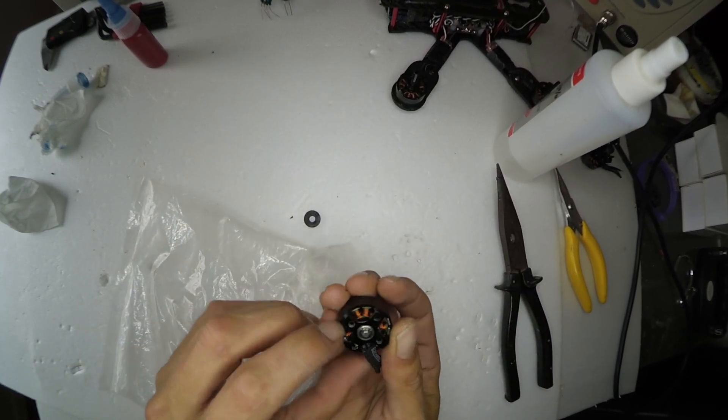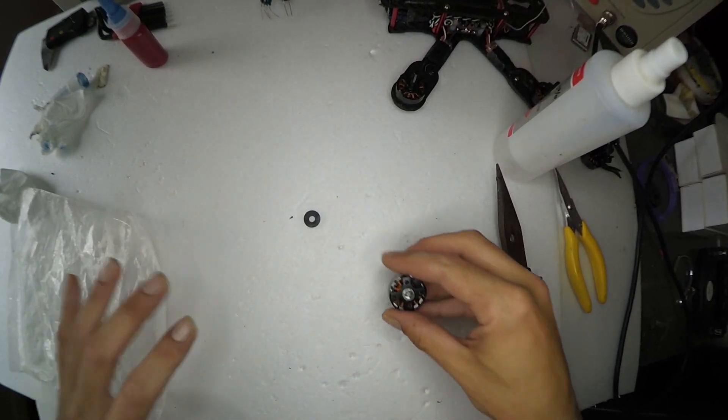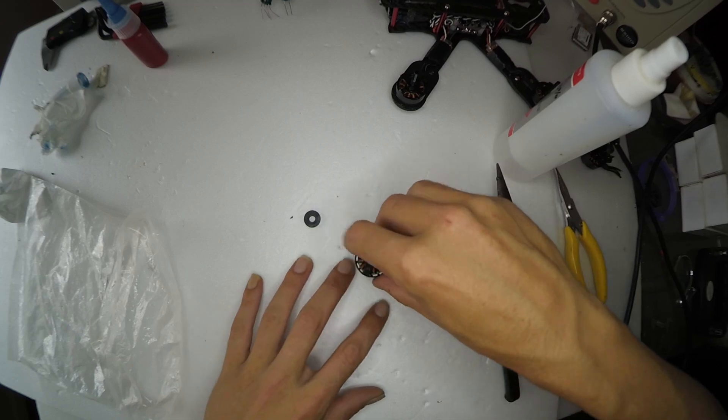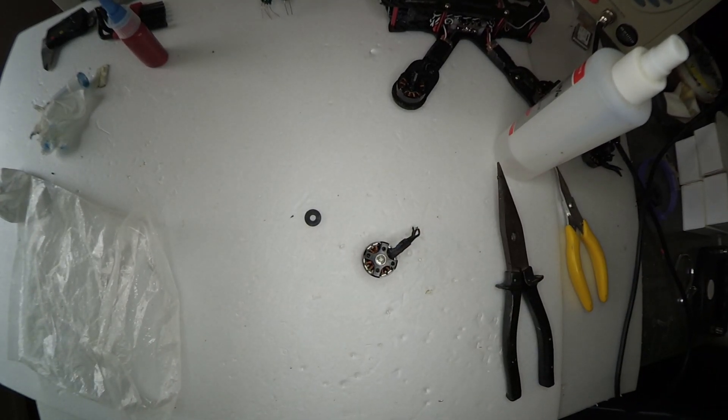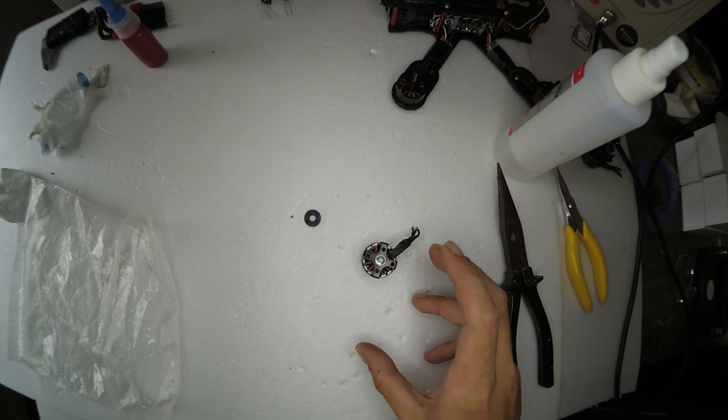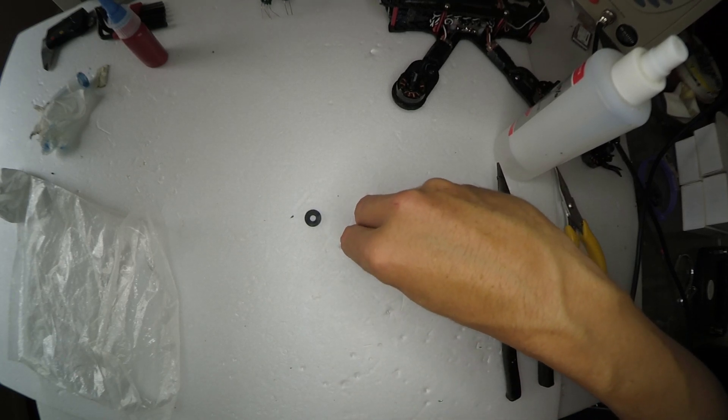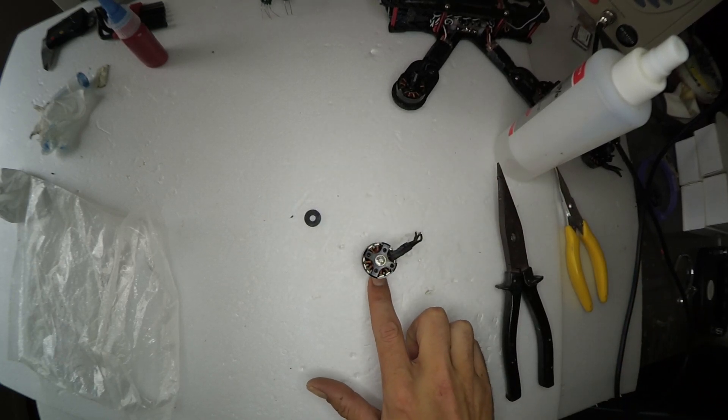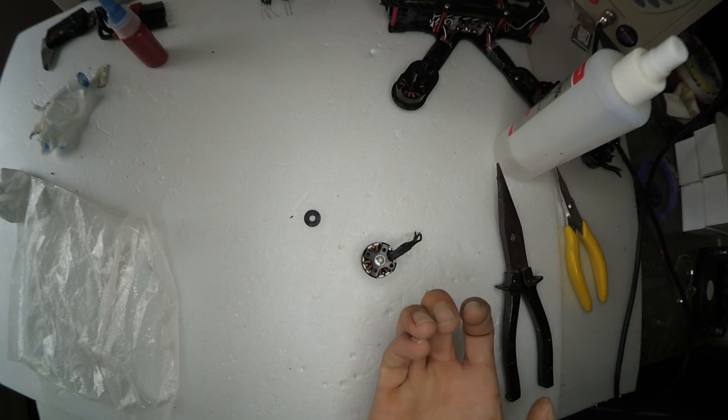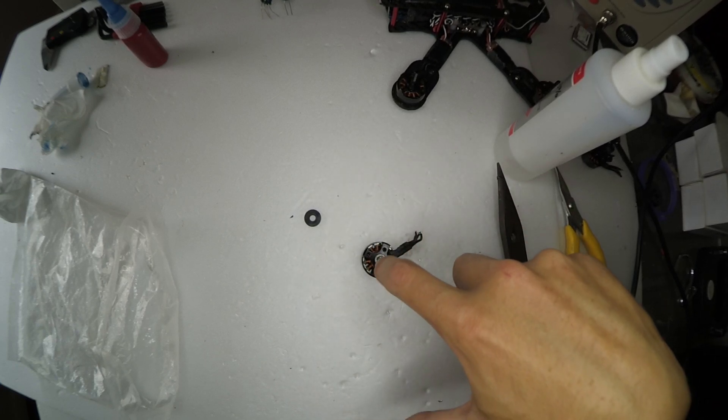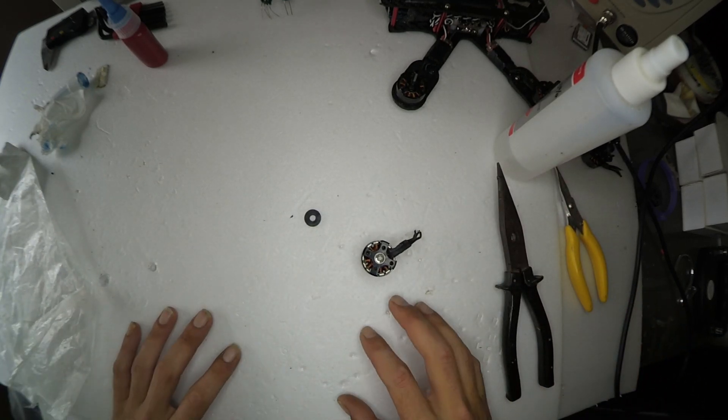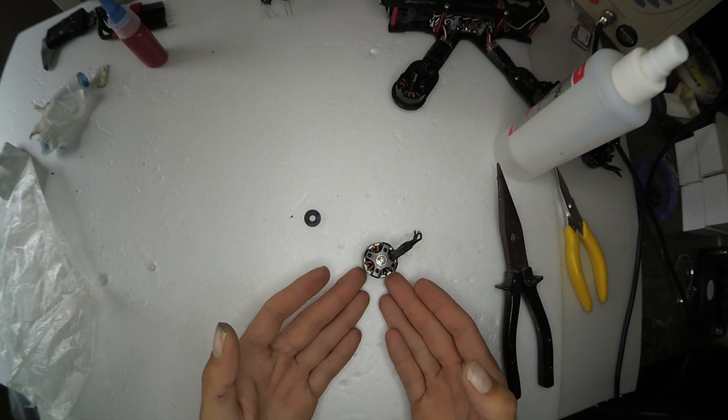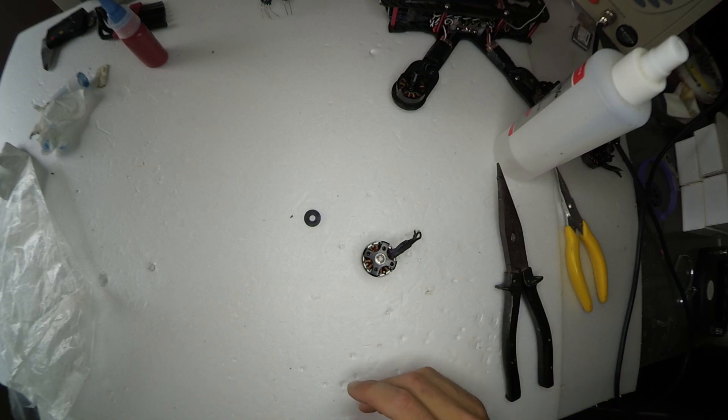Now, next step. Final step. Leave it sitting upside down for, it recommends, I think 24 hours is the set time for press fit Loctite. So, I like to leave mine upside down, just in case there's any excess Loctite that wants to drip out. You know, if you leave it upside down, it's not going to get into your bearings. So, we'll leave that there for 24 hours, come back to it, and honestly, you should not be able to remove that shaft out again. Go buy another $3 belt. Job done.